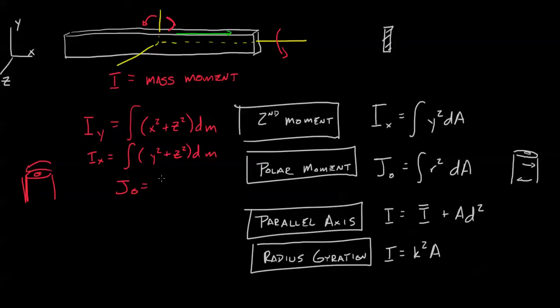In this case, we're going to take the integral of r squared dm, and apply it to this shape. You can imagine, just like before, if we have a really big radius, a really wide object, it's going to want to resist that rotation more.